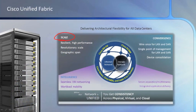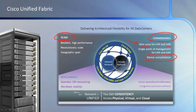Scalability is huge, and we'll be talking about that in the course. Intelligence, convergence — wire once for both the LAN and the SAN, as we've already alluded to. Being able to use devices that can access both LAN information and SAN information without having to reinvest or have two devices in place, one for each of those functions.